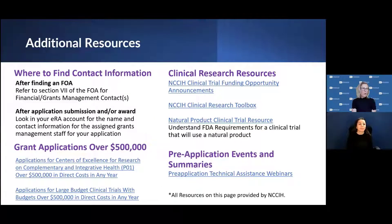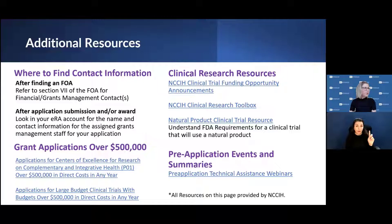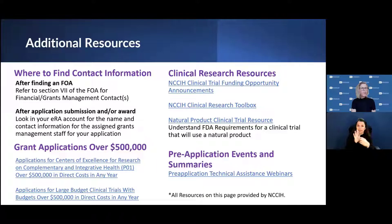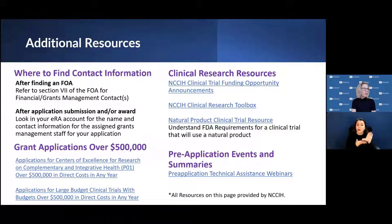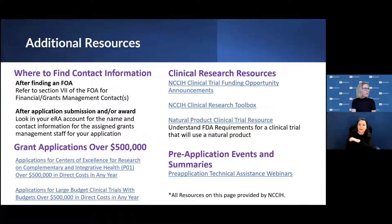To find contact information for your grants manager, you can find it in the FOA — refer to the grants contact section — or after the application was submitted, you can look in ERA Commons. Once it was awarded, you can also find our information on the Notice of Award. There are also links for clinical research resources as well as the over $500K grant policy process.